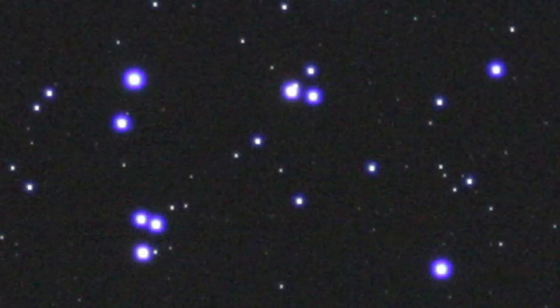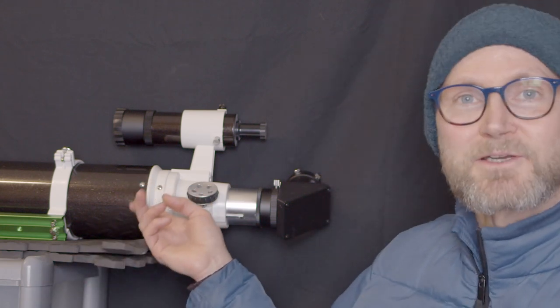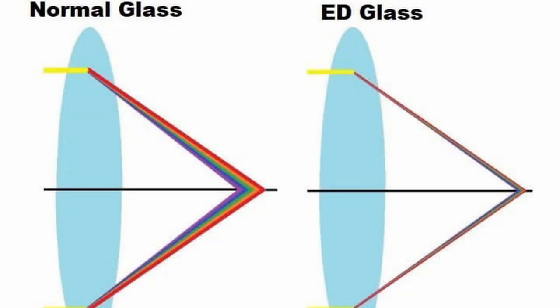So the step up from that would be ED glass. And ED stands for extra low dispersion. So it's similar to the crown and flint elements of this telescope I've got behind me, an achromat refractor. Only the exotic glass refracts the light to focus the wavelengths closer together.